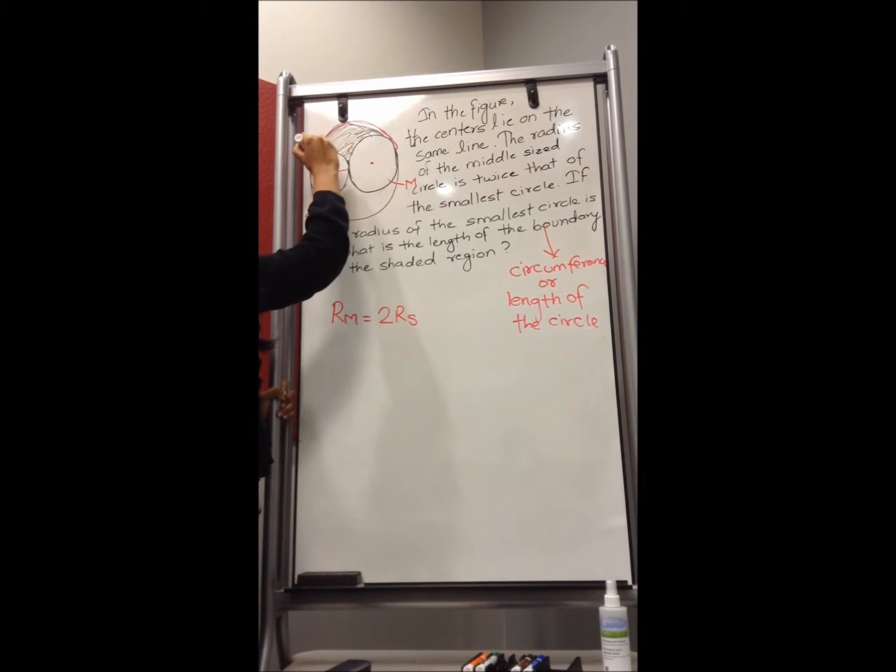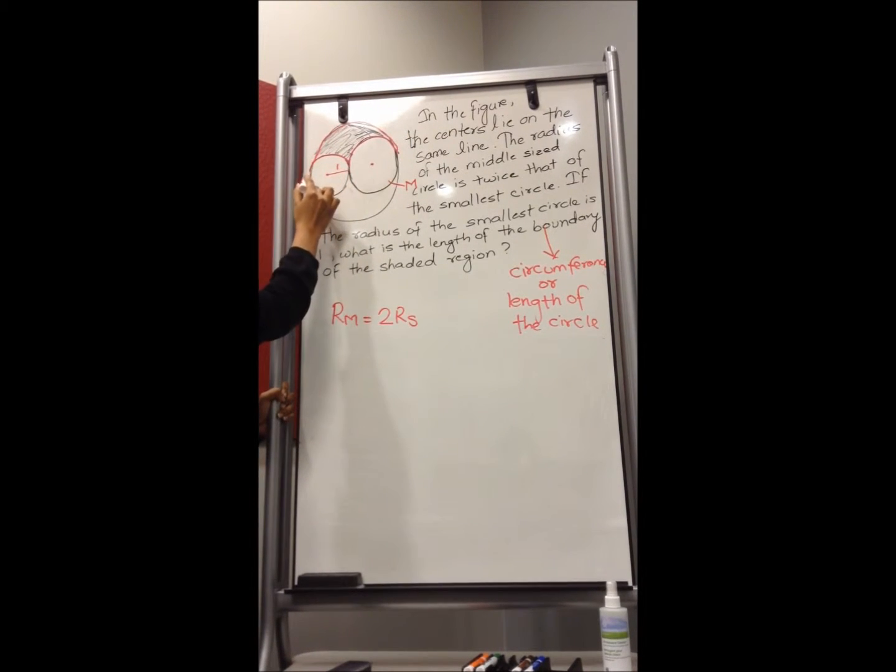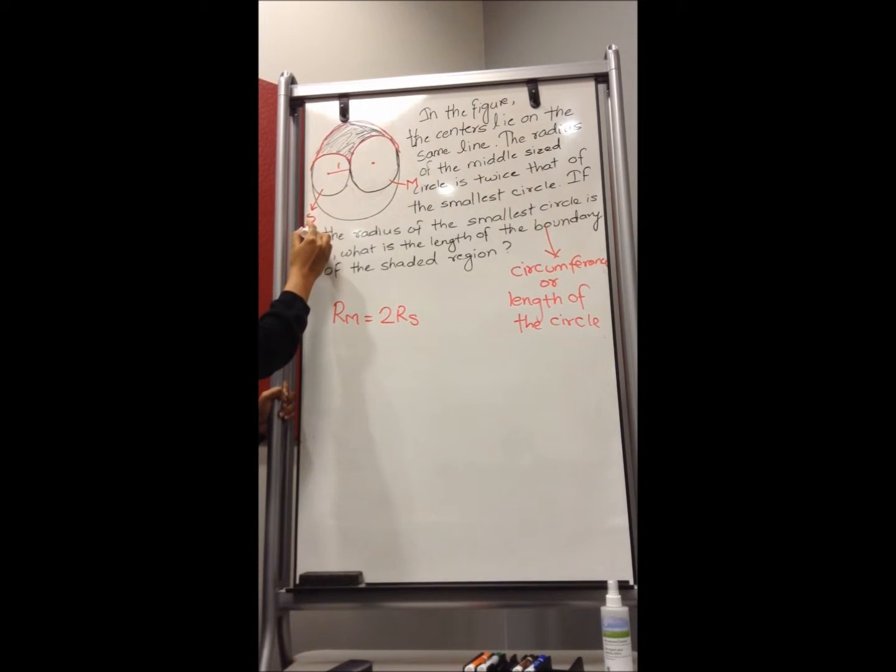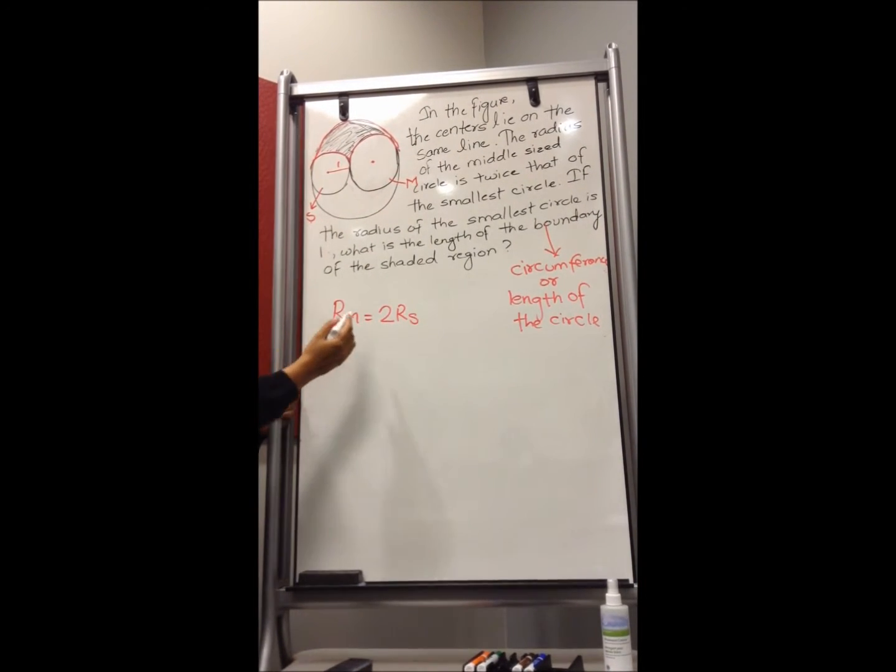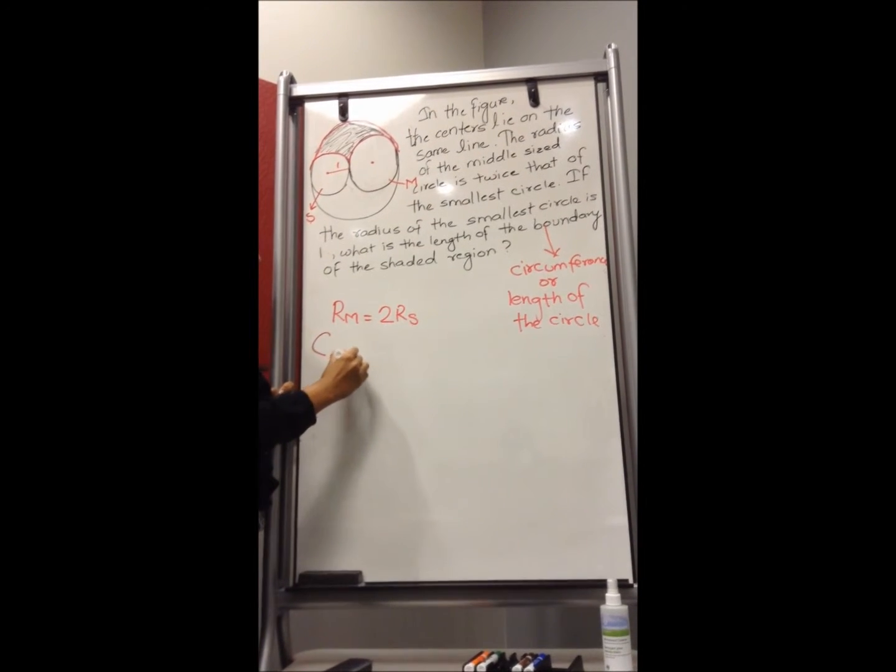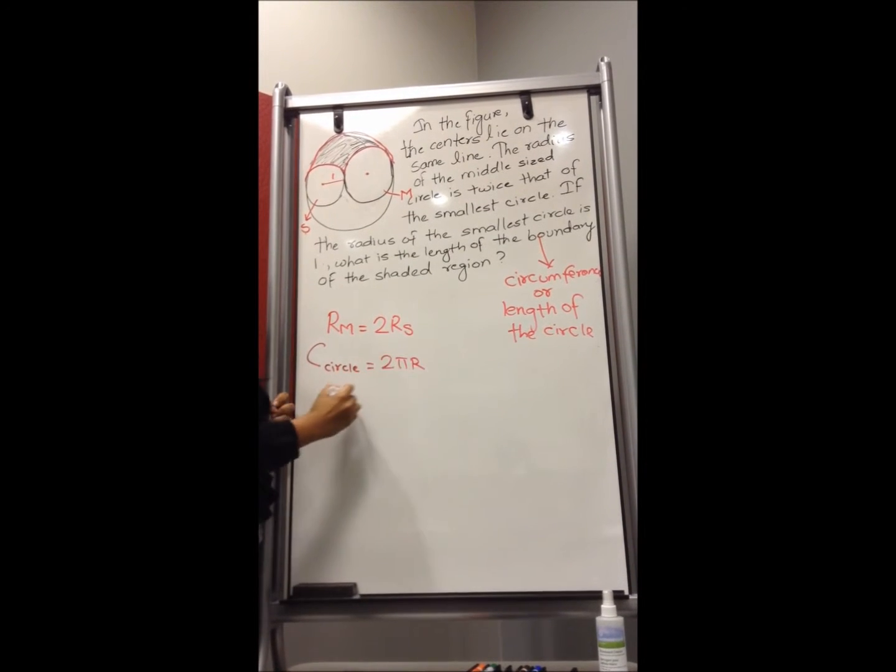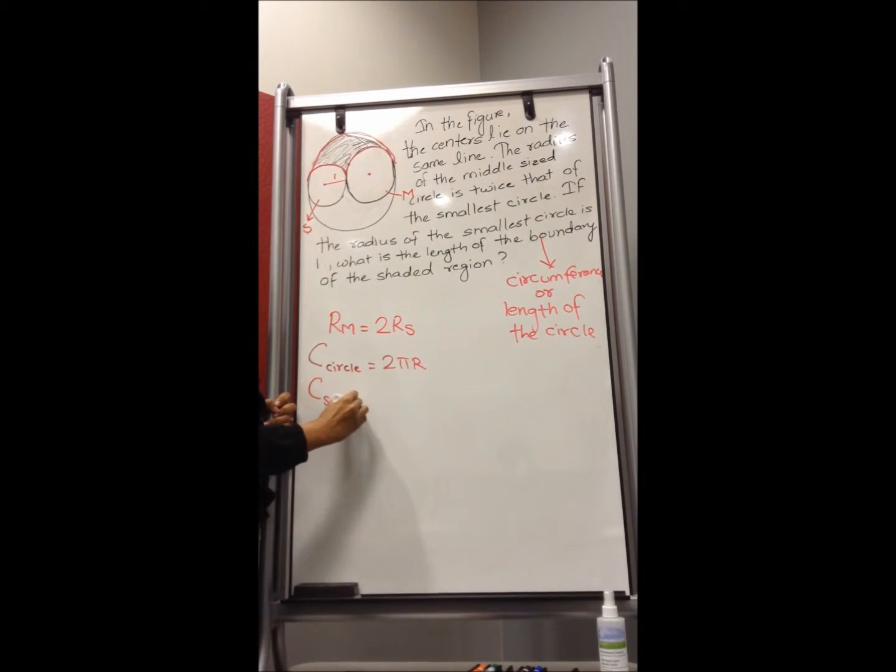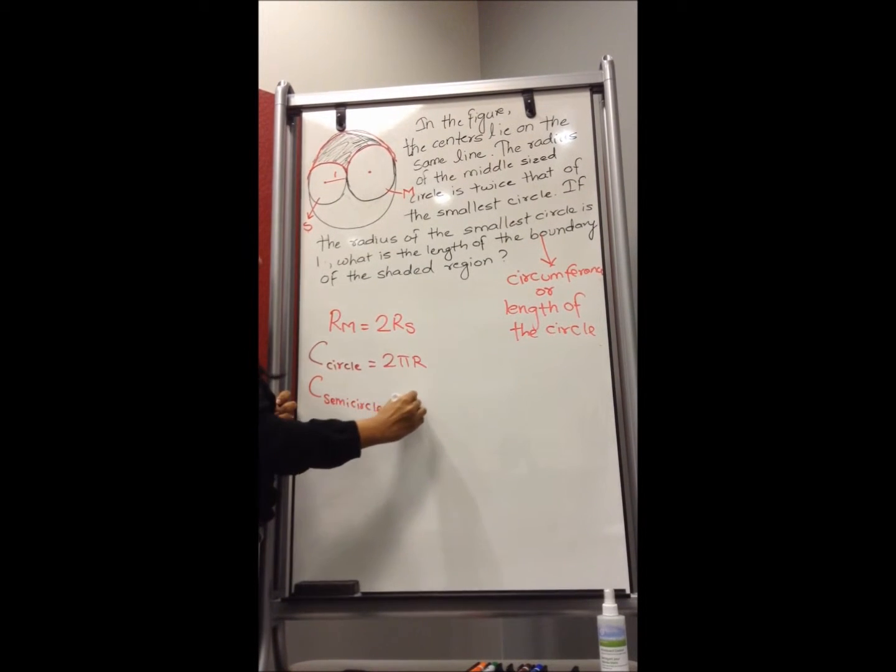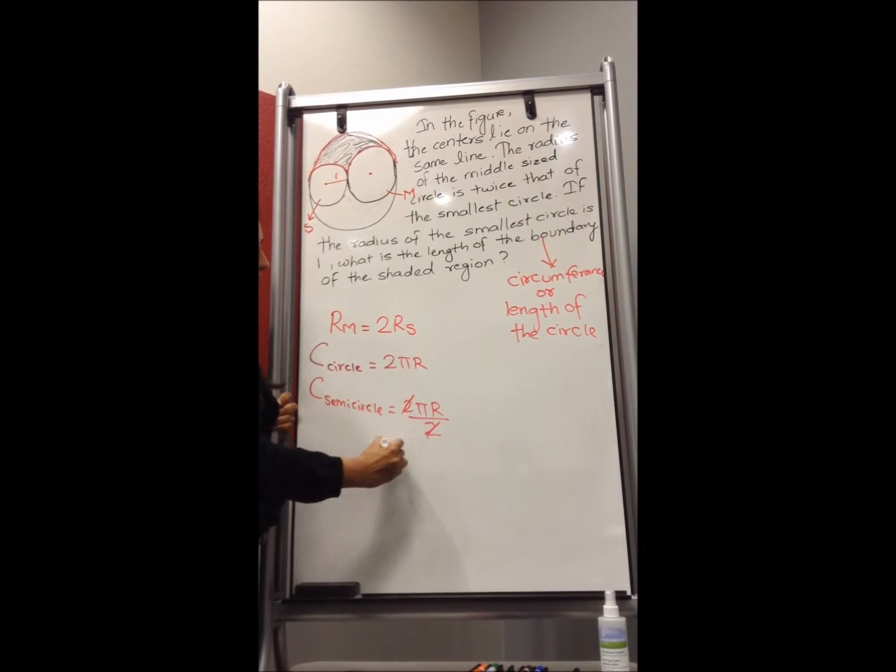This part, this one and this one. That means they are looking for the circumference of the semi-circle for the small size, for the medium size, and for the larger circle. So now here, the circumference of the circle is 2 pi r. But here we want circumference of the semi-circle, which is 2 pi r divided by 2, which is nothing but pi r.